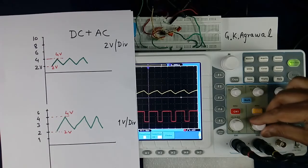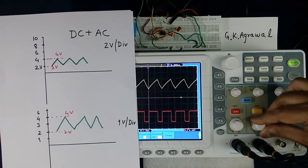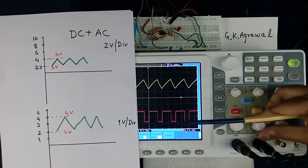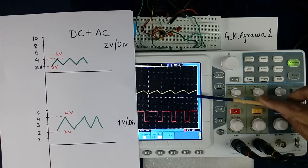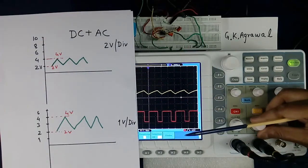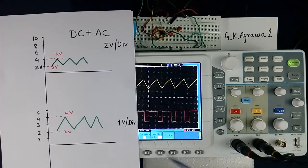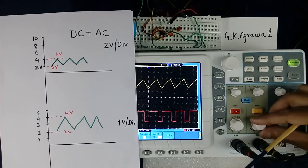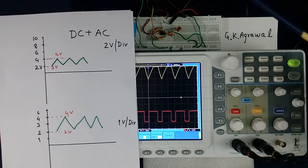I will show. See, both got shifted. Earlier this was here, this was here like this. When I reduce the scale, both will get shifted. If you go further, it will go out of range.